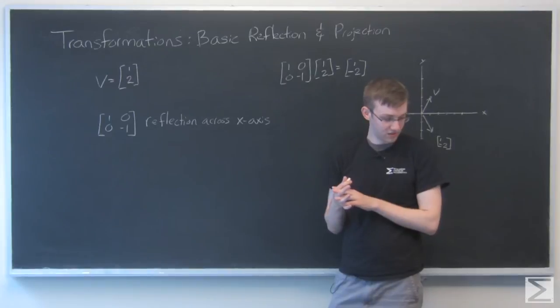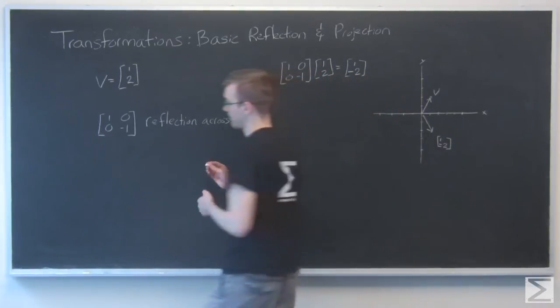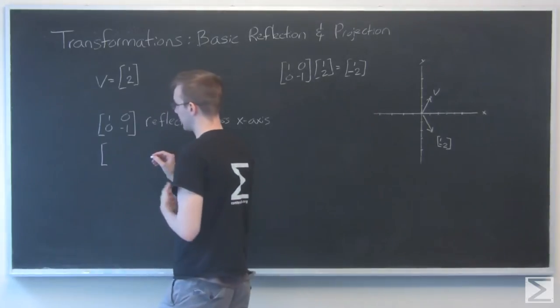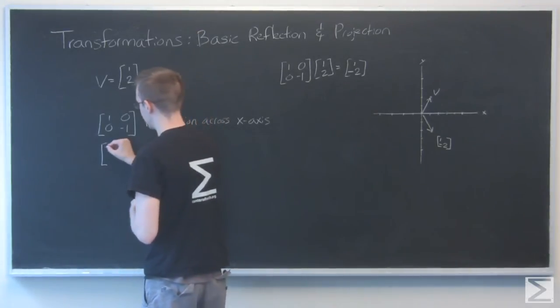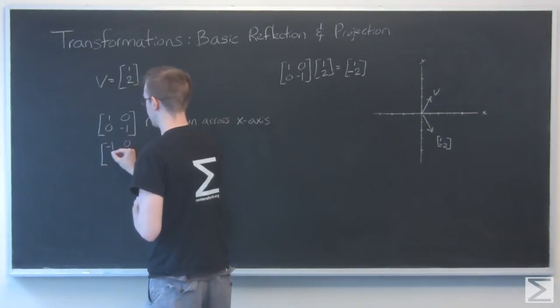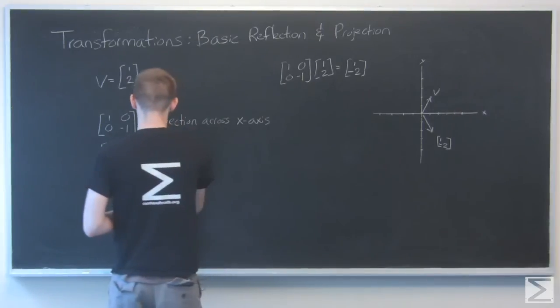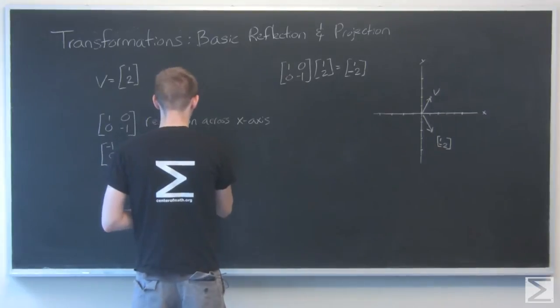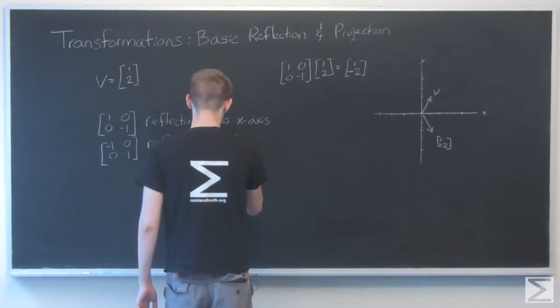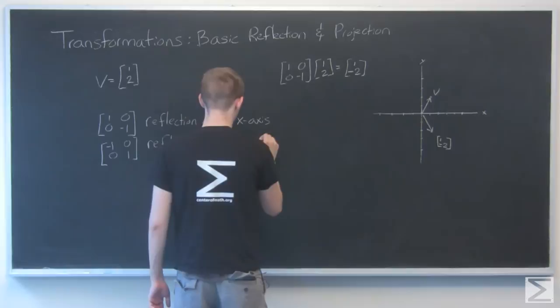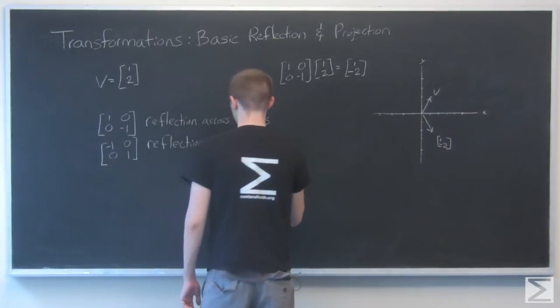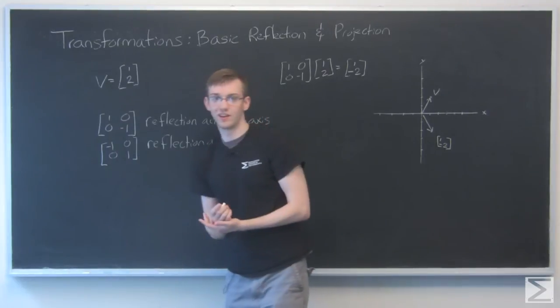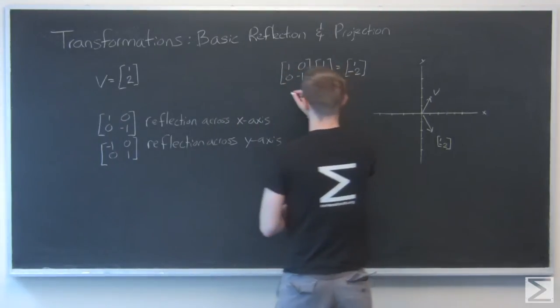So let's also look at the reflection across the y-axis. And similarly this is going to look a lot like the identity matrix, only this time that one is going to be negative. So what this matrix does is it grabs that x-value and it switches the negative sign on that. So we just reflect it the other way.